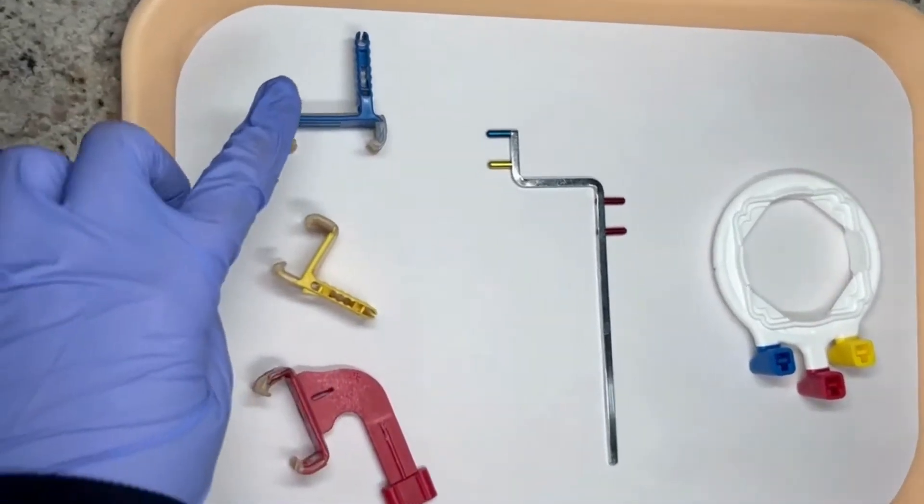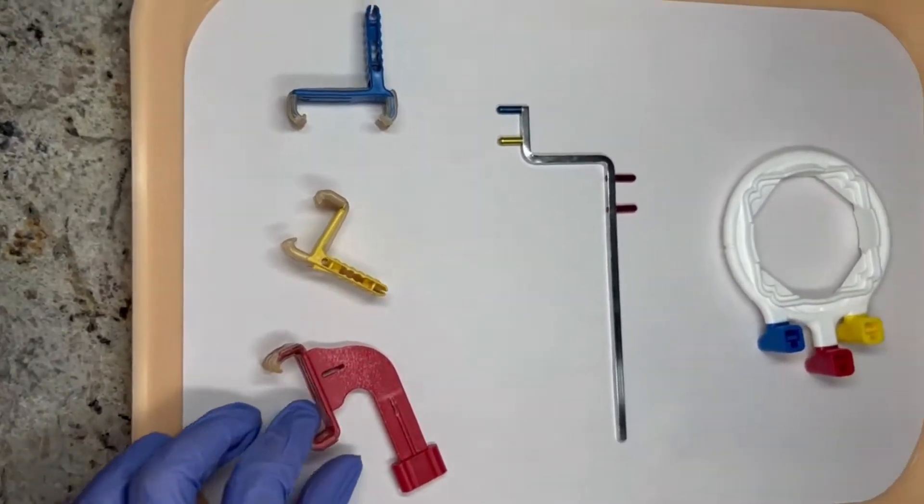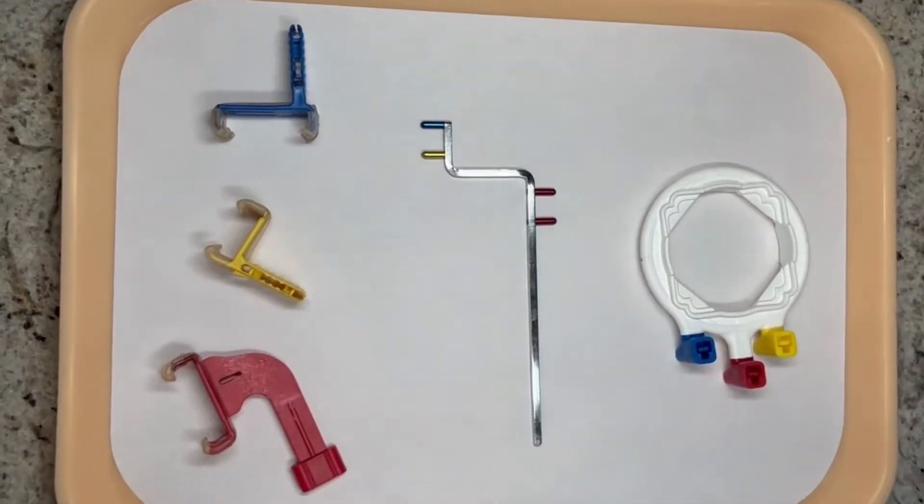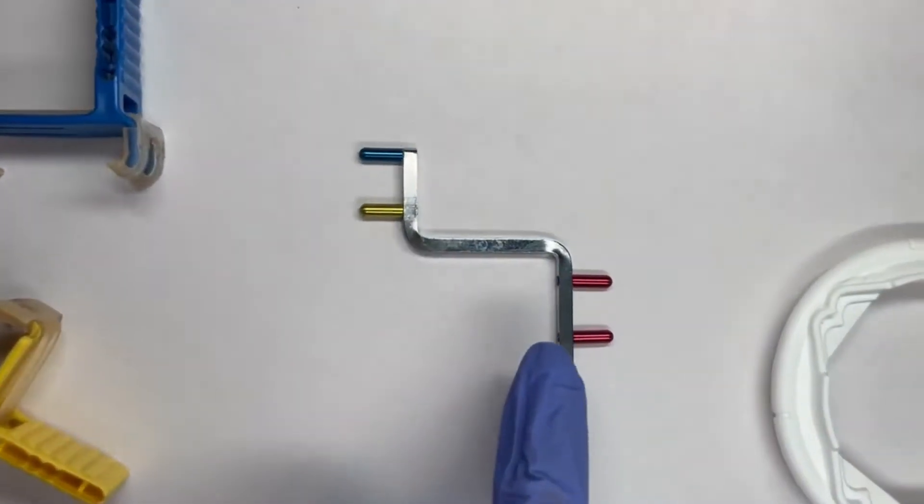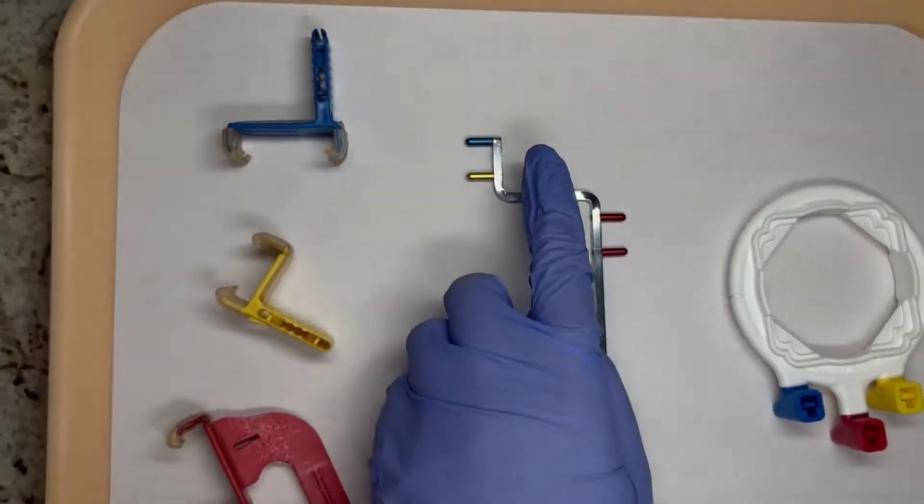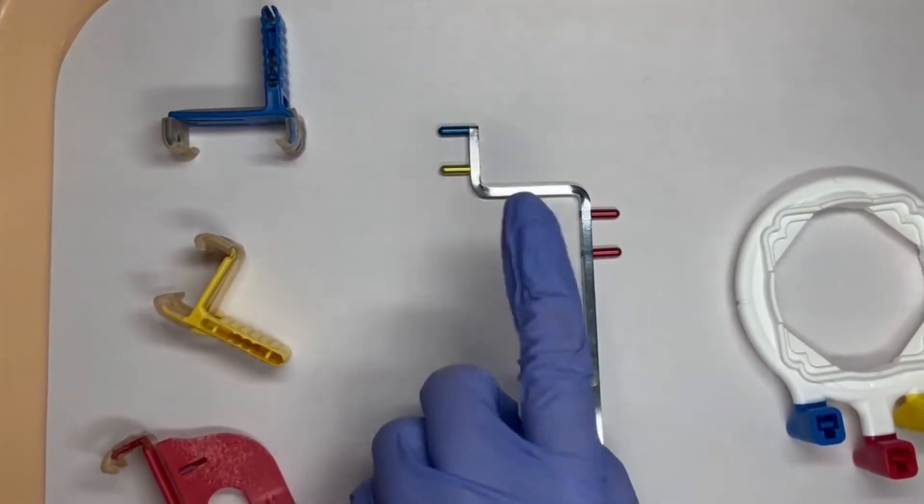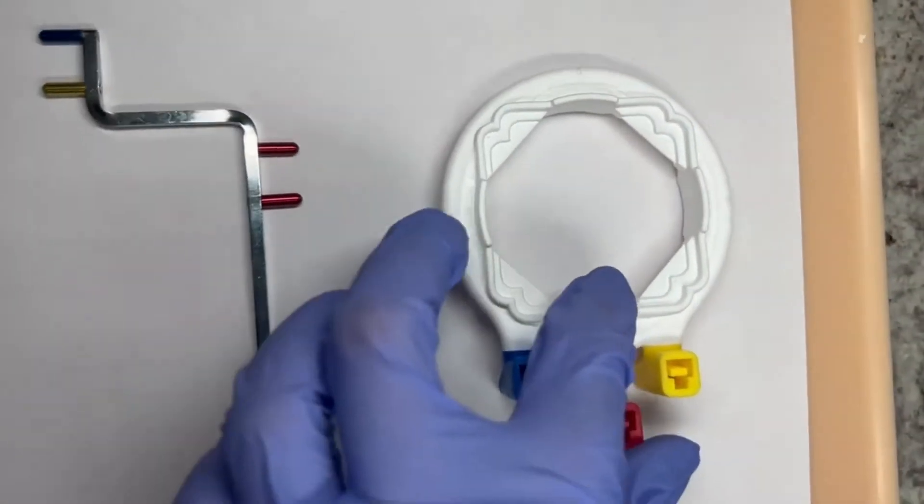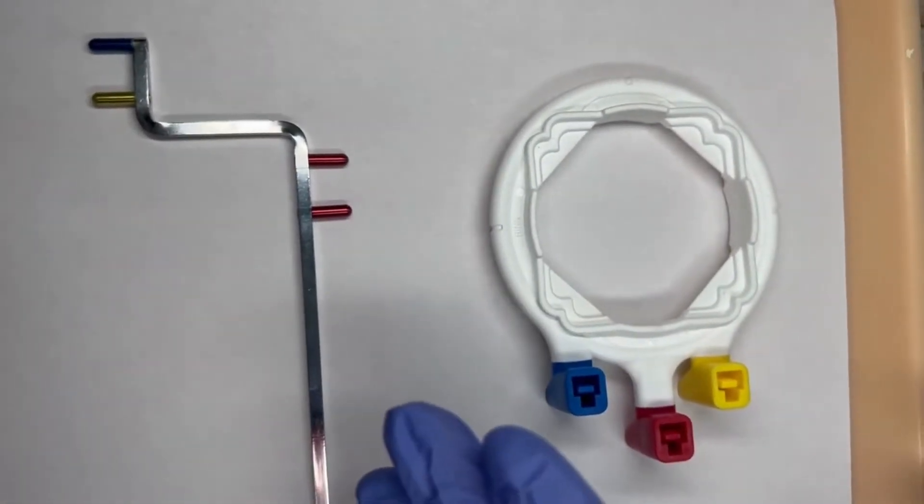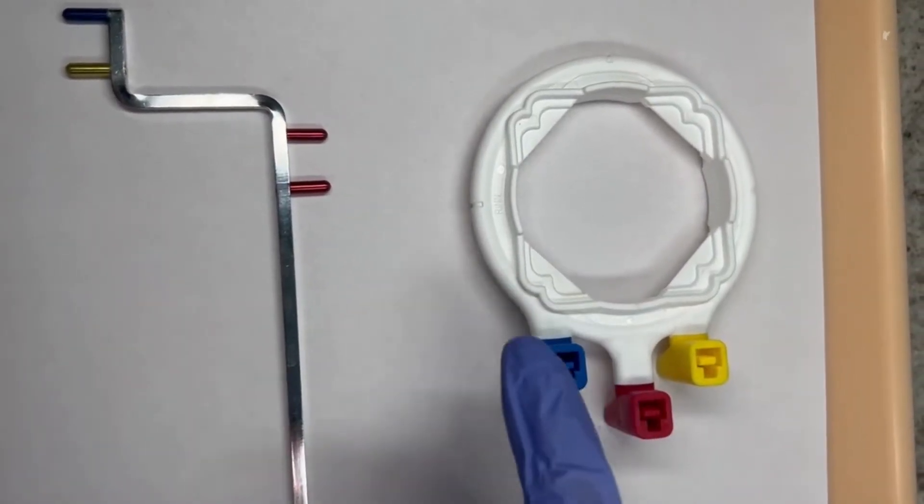We do still use the same three bite blocks that you would use for the three separate traditional ones, but as you can see we only have one arm instead of three separate arms and it shows you the different colors on here so you know which part to attach the bite tab to. Instead of three separate rings, we just have one ring to use with the three different colors which will tell you which arm to put it on.